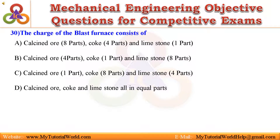Question 30. The charge of the blast furnace consists of. A. Calcine ore eight parts, coke four parts, and limestone one part. B. Calcine ore four parts, coke one part, and limestone eight parts. C. Calcine ore one part, coke eight parts, and limestone four parts. D. Calcine ore and coke four parts, and limestone one part.